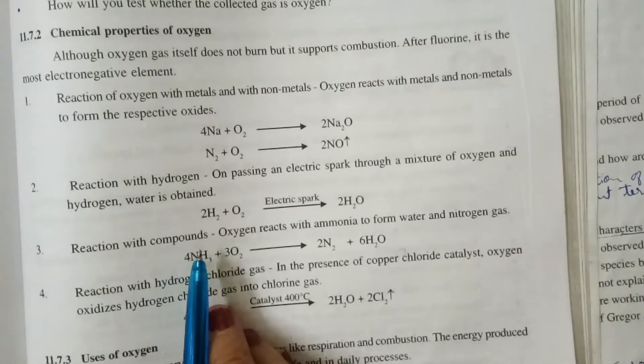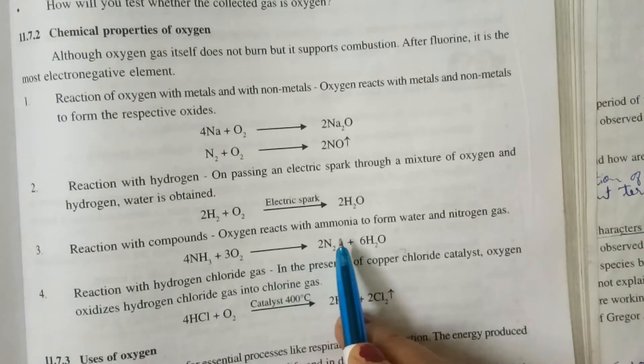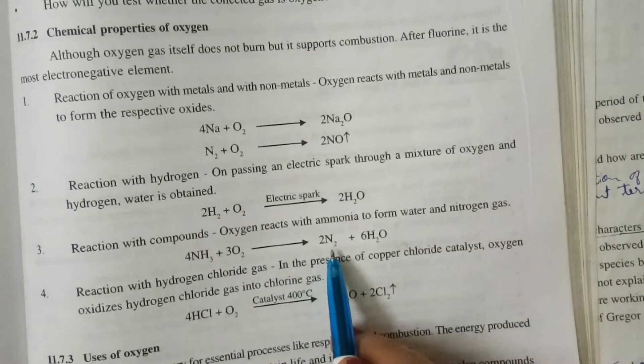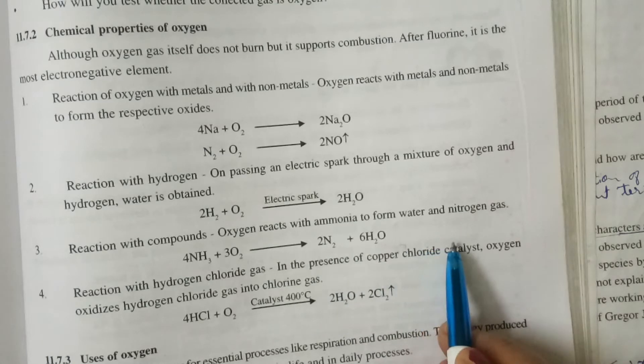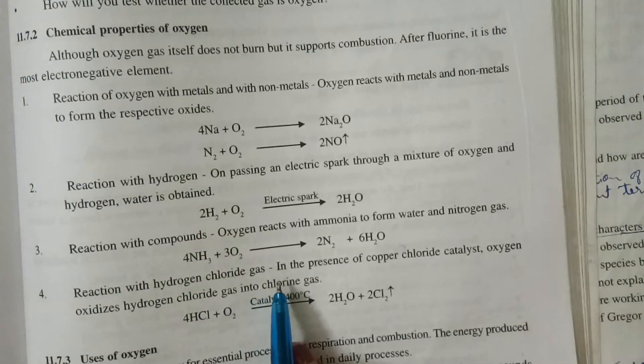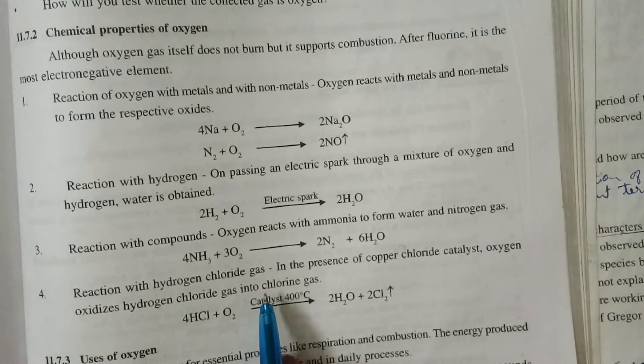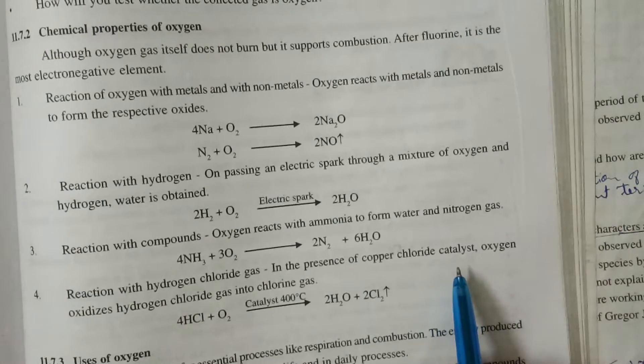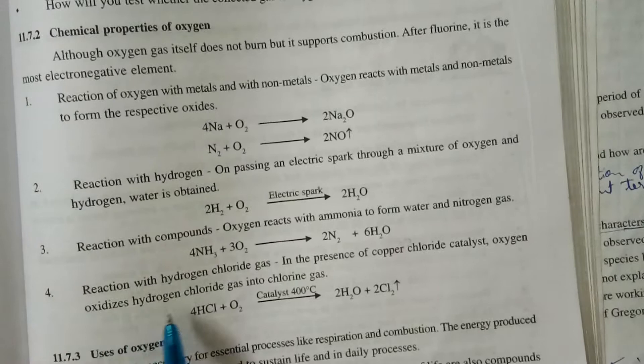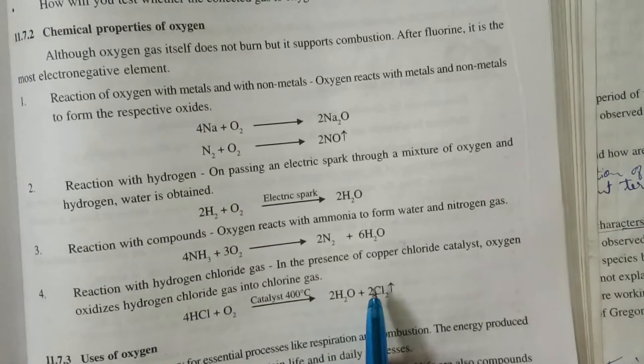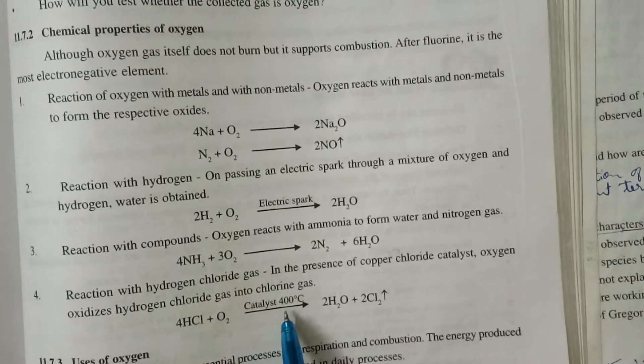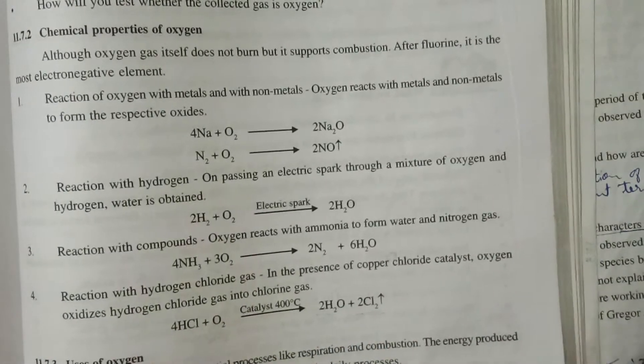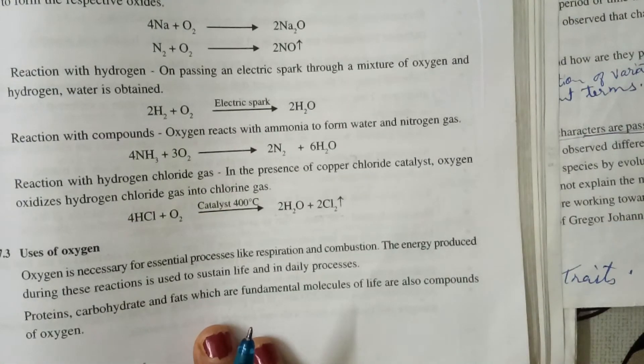Reaction with compounds. So oxygen reacts with ammonia to form water and nitrogen gas. NH3 is ammonia when it is reacted with oxygen. N2, nitrogen gas is formed and water is also formed. Reaction with hydrogen chloride gas. Hydrogen chloride gas is HCl gas. So when oxygen is reacted with HCl gas in presence of copper chloride as a catalyst. Then oxygen oxidizes hydrogen chloride gas into chlorine gas. So HCl plus O2 in presence of catalyst and at 400 degree centigrade, water is formed and chlorine gas is released. So in this way we have seen the chemical properties of oxygen.